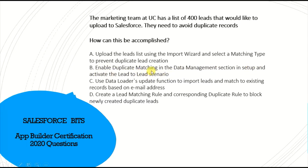I think those two — enabling the duplicate matching rule and the lead-to-lead scenario — are independent things, so option B is not the right answer. Option C is to use the Data Loader's update function to import the leads and match existing records based on email address; I'm not sure if that's right. Option D — create a lead matching rule and a corresponding duplicate rule to block newly created duplicate leads — that also looks correct, so the answer is A and D.